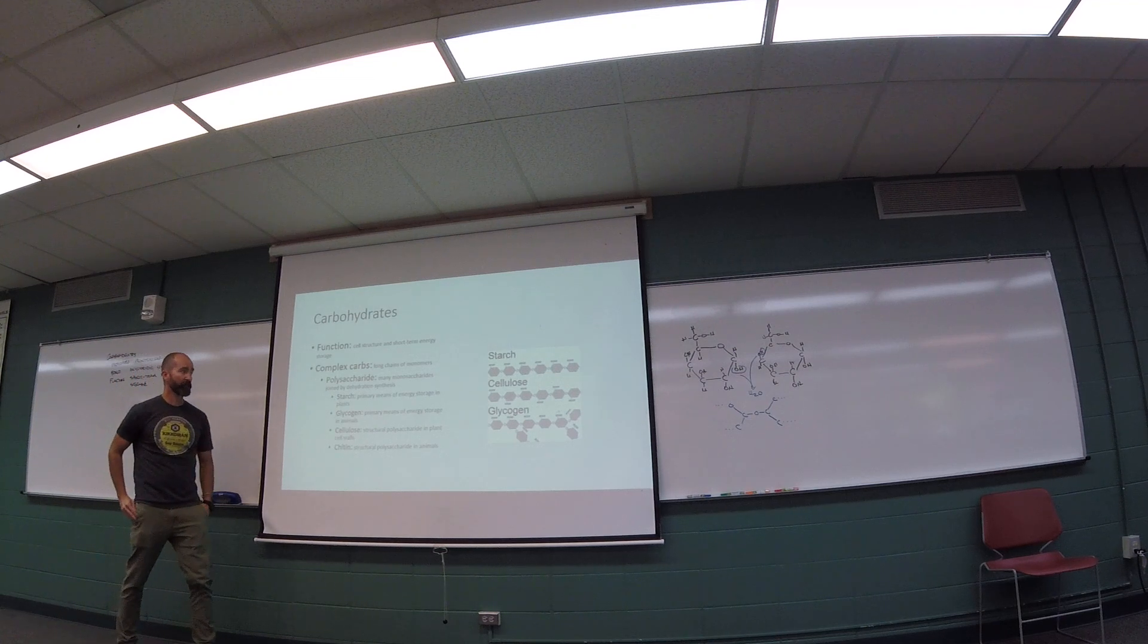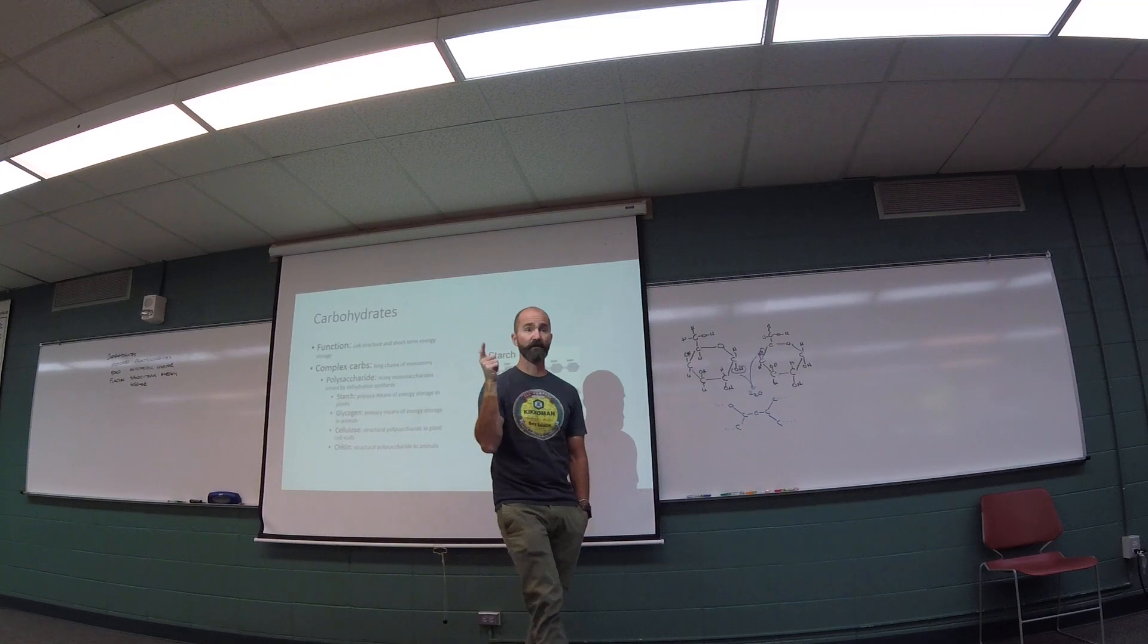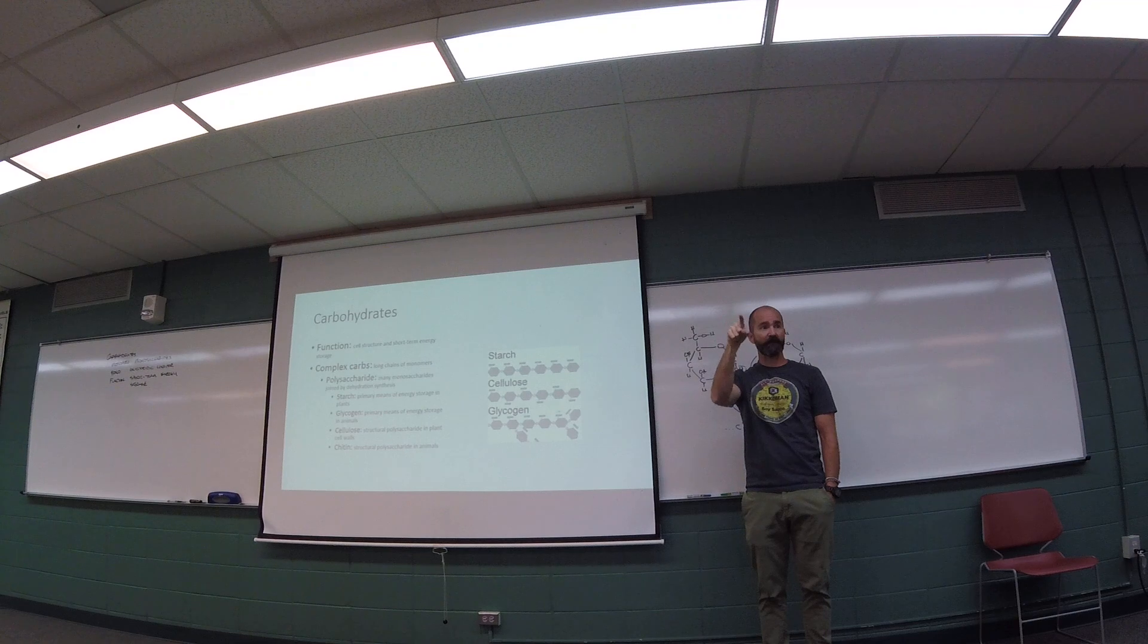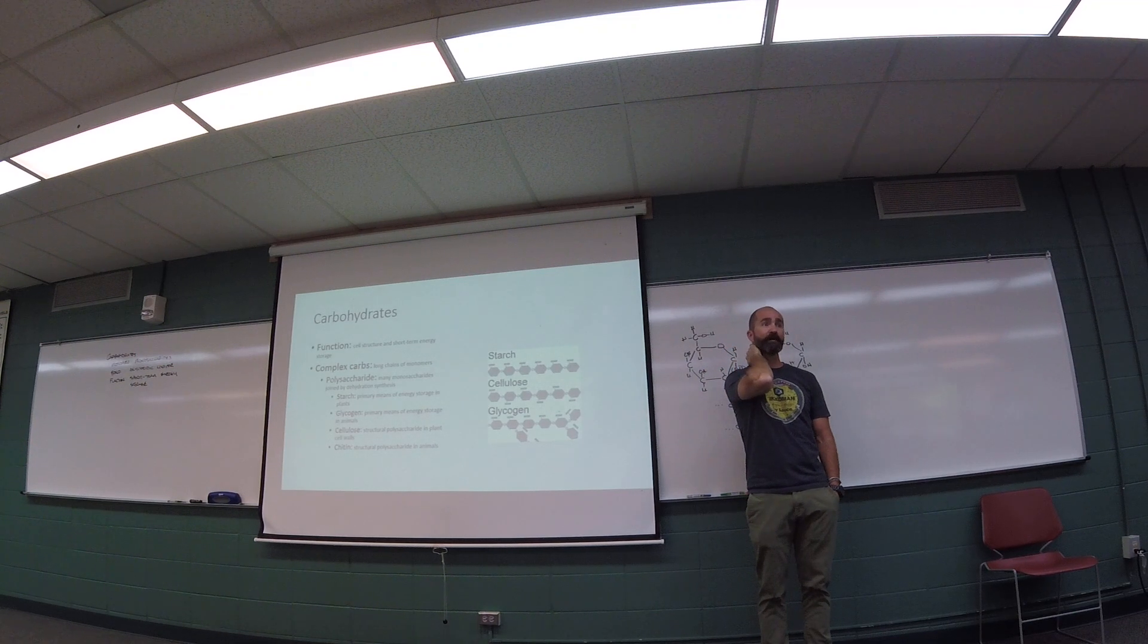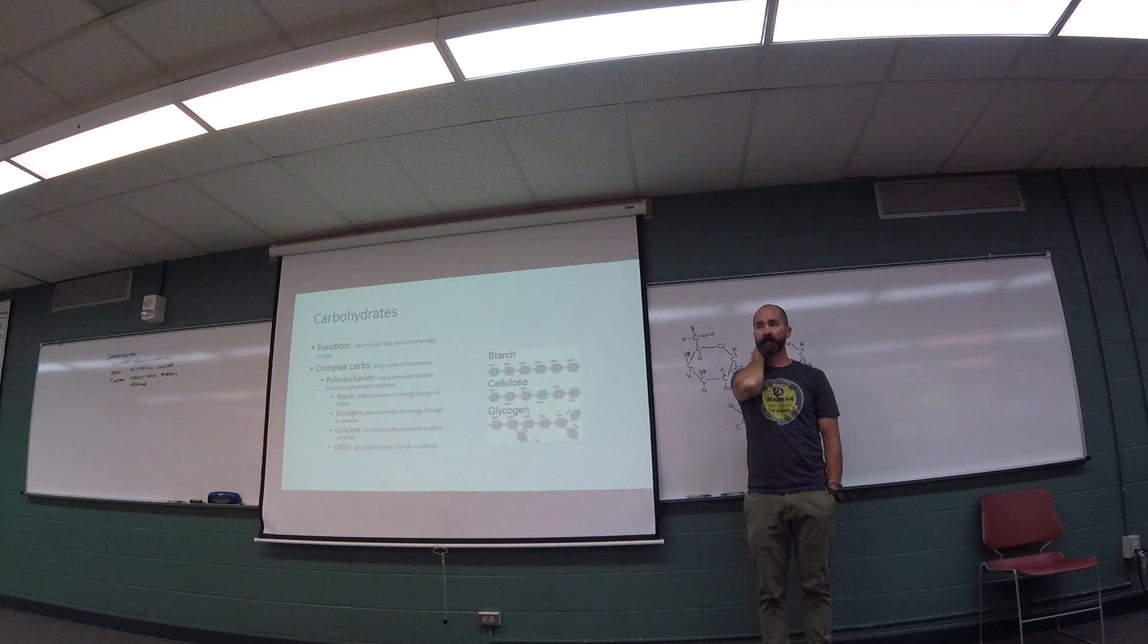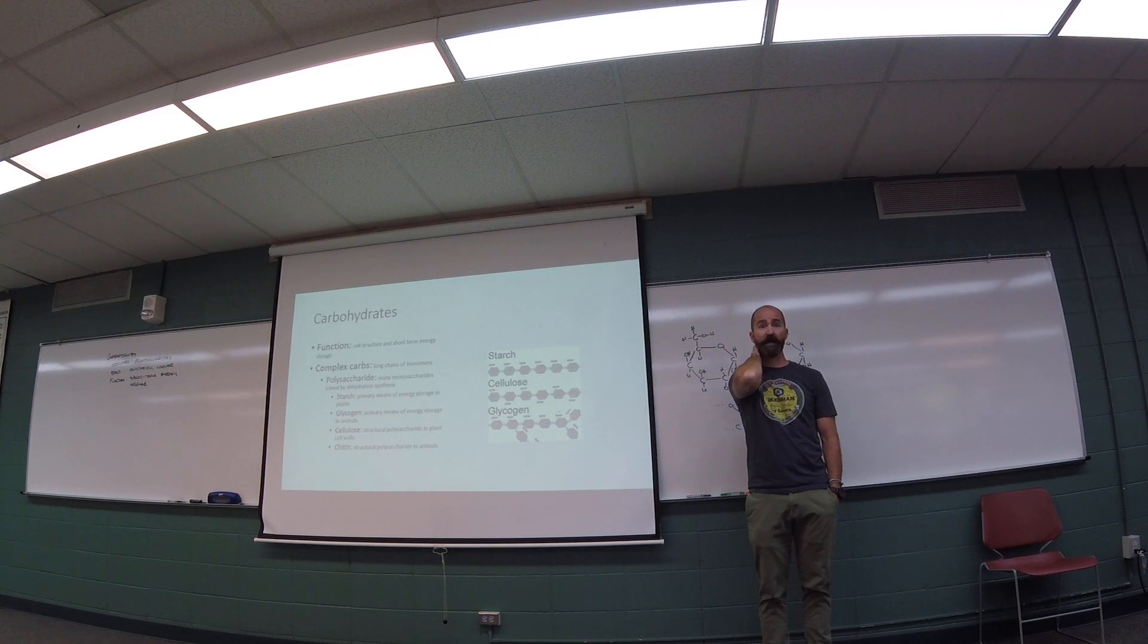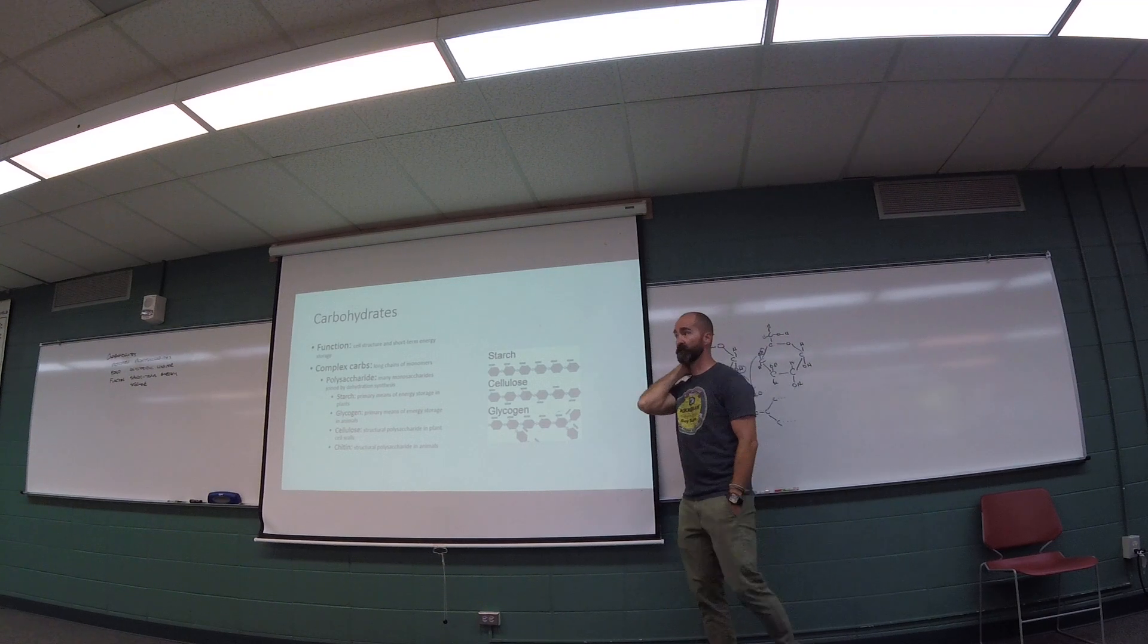Here are some really good examples of polysaccharides. We've already talked about one, and that's starch. Starch is just a whole bunch of glucose molecules stuck together. What's interesting about starch is its three-dimensional conformation is like a helix. It just kind of spins like a tube in space. Starch is the primary storage molecule for carbohydrates in plants. You won't find starch in animals.